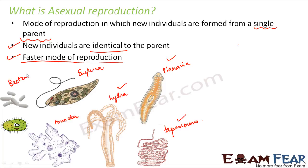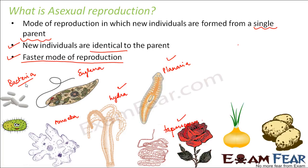Asexual reproduction is also seen in bacteria, the simplest unicellular organisms. It is also seen in some plants like onion, potato, and rose — in these plants asexual reproduction is quite common.